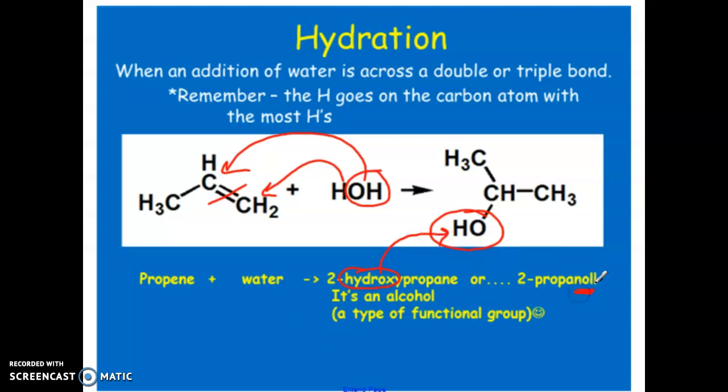propene plus water gives us 2-hydroxypropane, or 2-propanol. The hydroxy branch is the OH group, or in alcohol naming has the suffix -ol. So 2-propanol means that the OH group is coming off of carbon number 2 here. Don't worry so much about the naming. We're going to go through alcohol naming in the lesson associated with that, but I just like to preview the different types of reactions and the naming as we go along.